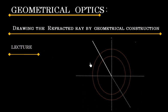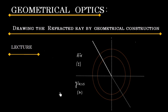In this lecture, we will discuss drawing the refracted ray by geometrical construction. Let us say we have an incident ray coming from a rarer medium and going into a denser medium. The rarer medium is air and the denser medium is glass. Air has a refractive index of 1 and glass has a refractive index of mu, where mu is greater than 1, meaning glass is denser than air.